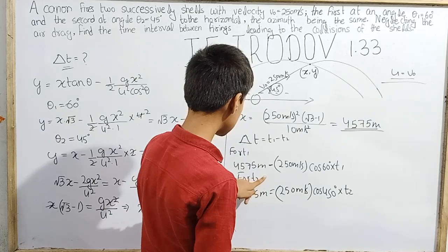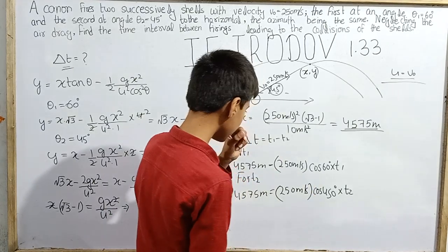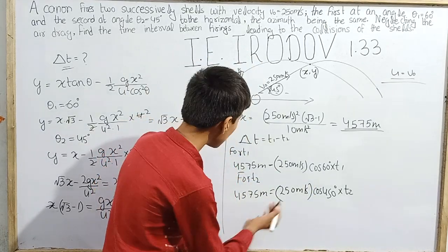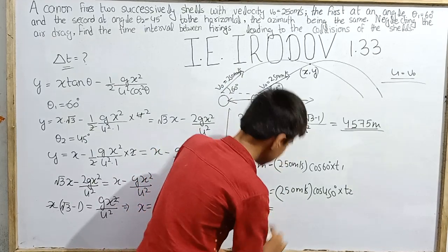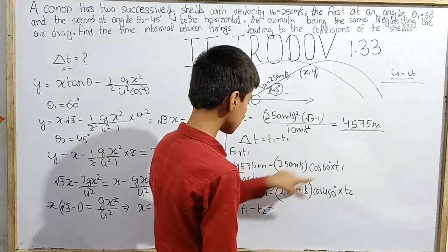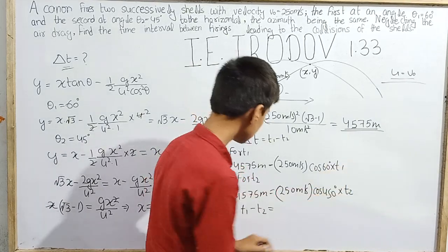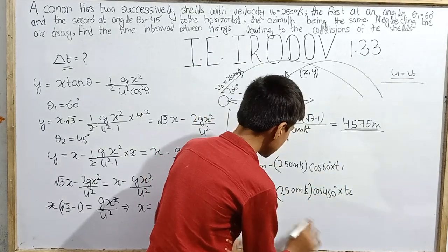After solving, T₁ minus T₂ will finally give us the delta T value. The delta T value, after solving T₁ and T₂, comes out to be nearly 10.7 seconds.